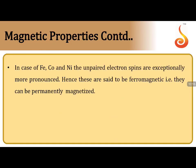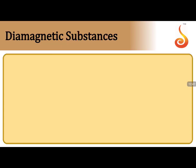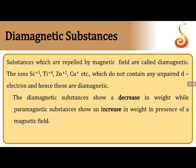Ferromagnetic substances — iron, cobalt, nickel — have permanent magnetism acquired even in the absence of a magnetic field. They show very strong attraction towards an external magnetic field. Examples of ferromagnetic materials include iron, cobalt, nickel, and CrO₂. These all come under ferromagnetic materials.